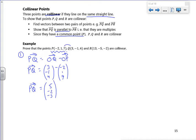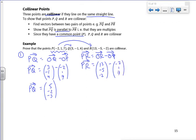Now I'm going to do P to R. So P to R will be O to R minus O to P. So P to R is going to be 13, minus 5, minus 2, take away minus 2, 1, 7. So P to R is 13 minus minus 2 is 15, minus 5 minus 1 is minus 6, minus 2 minus 7 is minus 9.